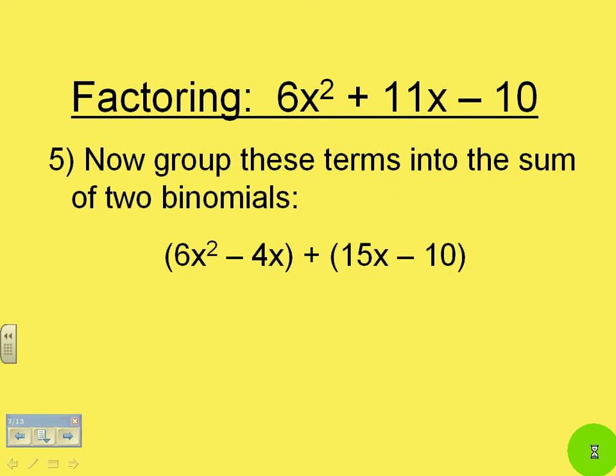Now we group these terms into the sum of two binomials. So here we have 6x squared minus 4x is one binomial and 15x minus 10 as the second.